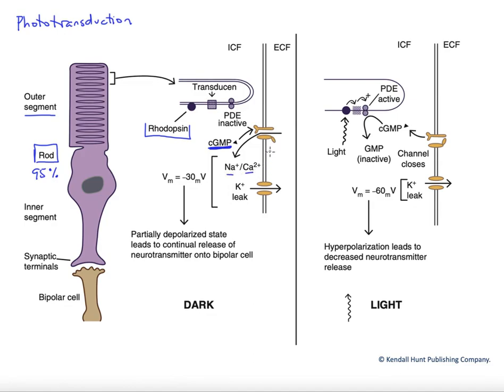Both of those ions flow down their electrochemical gradients into the cell, tending to depolarize it. Conversely, there's a potassium leak channel that is a little bit more dominant, and that potassium would be going down its electrochemical gradient out of the cell. The combination of those ion currents lead to a partial depolarization, about minus 30 millivolts.